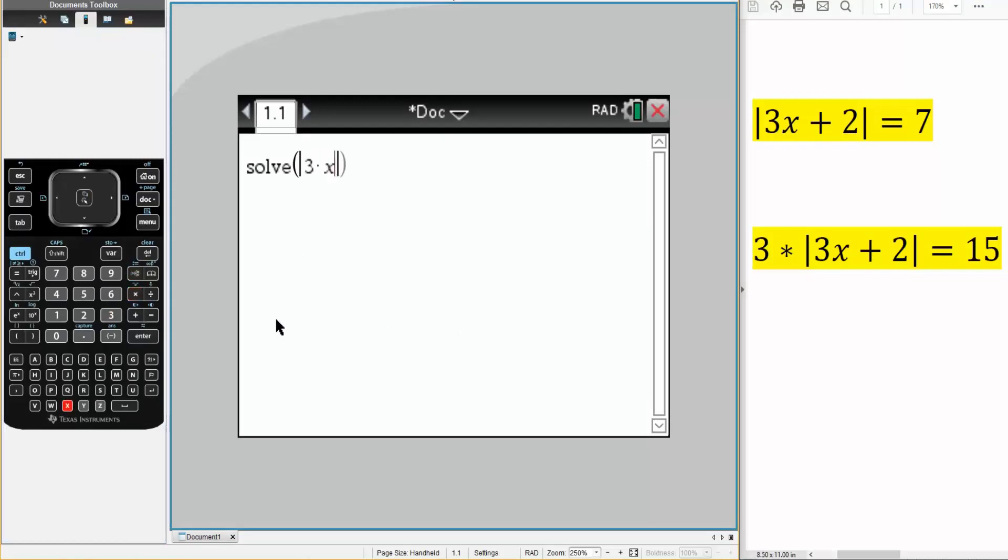So 3 times x plus 2 is equal to 7, comma x. Hit Enter, and so it gave us the answer that x could be negative 3 or 5 over 3.